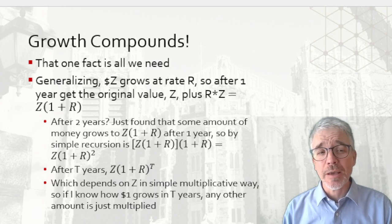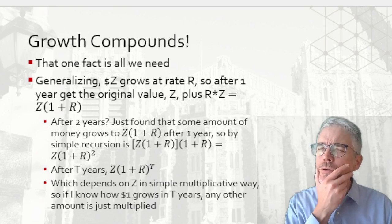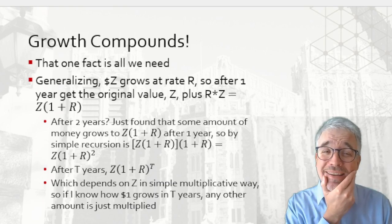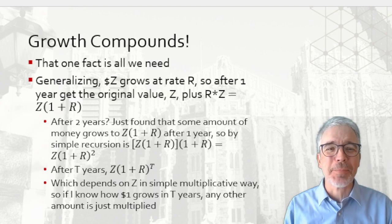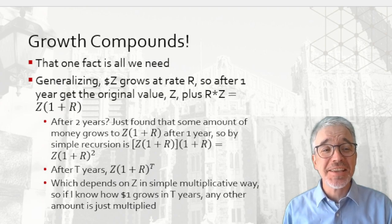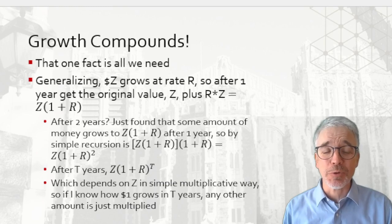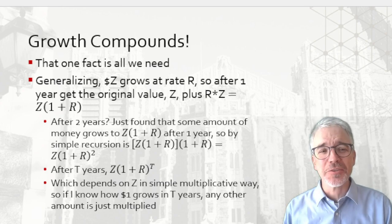Do that a few more times. Start to figure out, oh, maybe there's some kind of pattern going on. Yeah, there's a pattern. After T years, I would have Z times (1 + R) to the T power. So after 10 years, I would put in T equals 10. After 15 years, T equals 15.